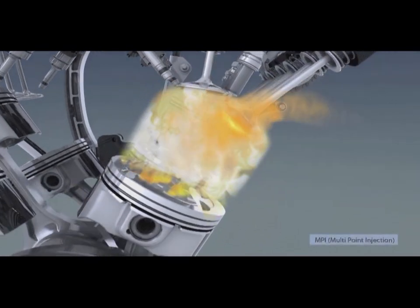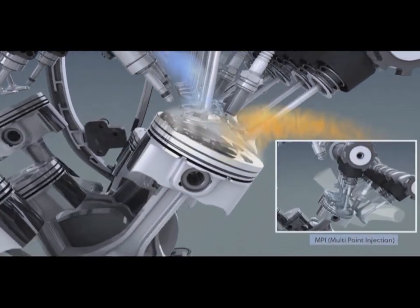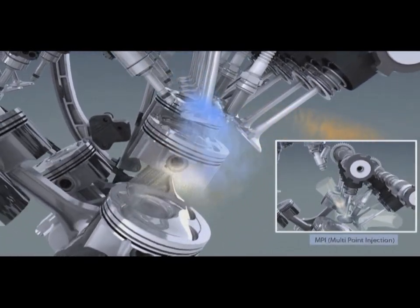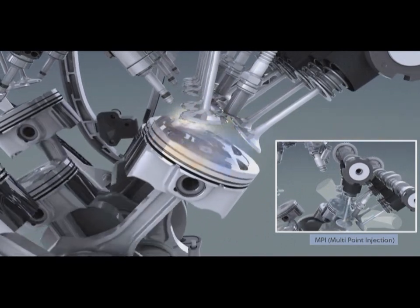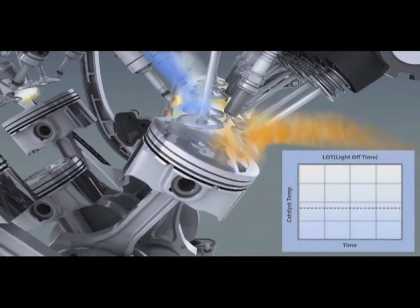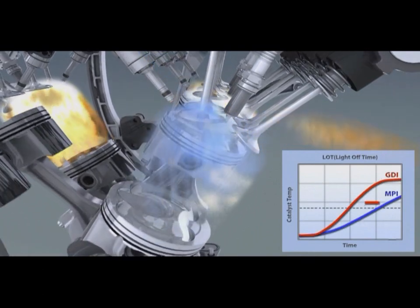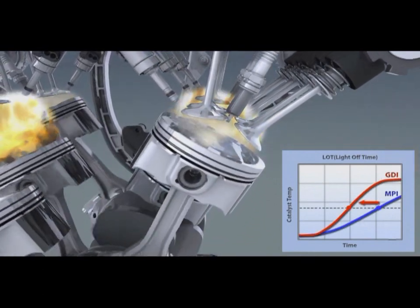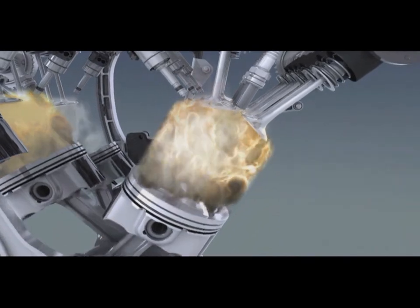Current MPI systems inject fuel into the intake port. The stratified fuel around the spark plug improves startability by enhancing combustion stability. Split injection increases exhaust energy and shortens the catalyst light off time. Exhaust gas emissions are thus reduced.